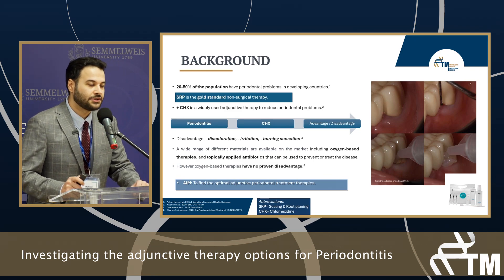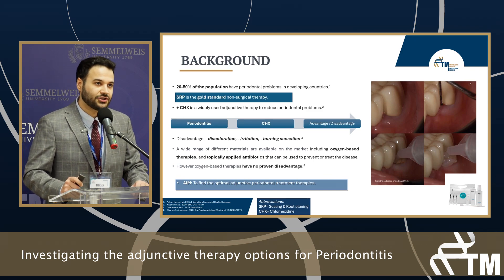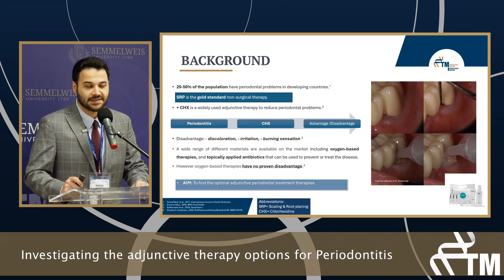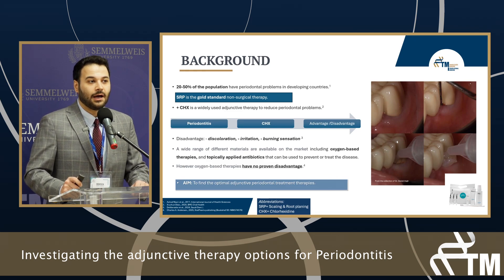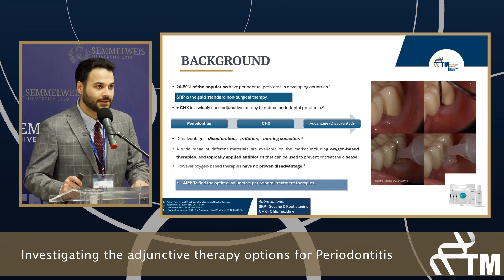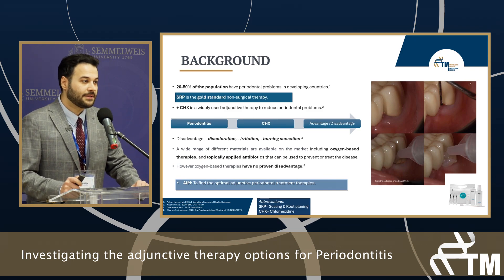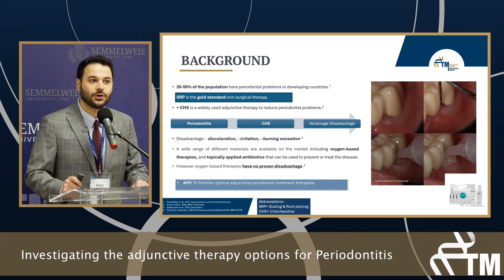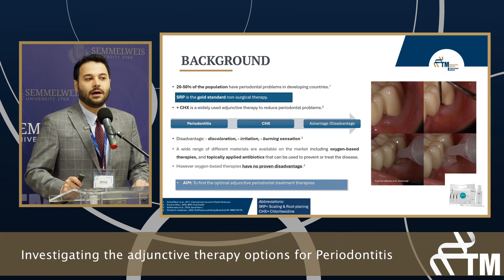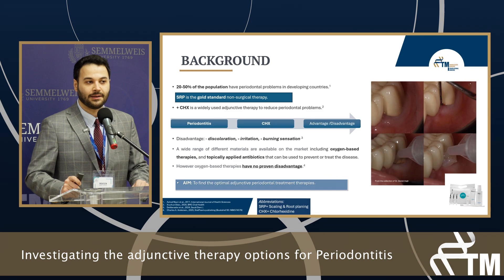Scaling and root planing together with chlorhexidine is a widely used approach to treat periodontal problems. However, like other materials, chlorhexidine has disadvantages such as discoloration, irritation, and burning sensation. On the other side, we have a wide range of different materials available on the market, such as oxygen-based therapies and topically applied antibiotics, which can be used to either treat or prevent the disease. Oxygen-based therapies have no proven disadvantage, and that is their main advantage.